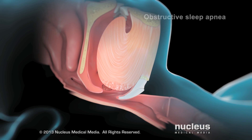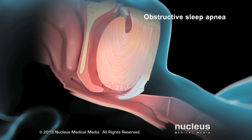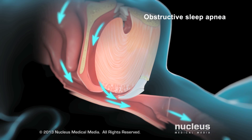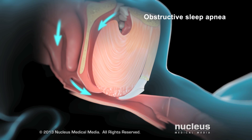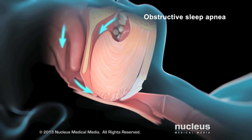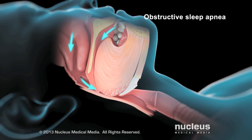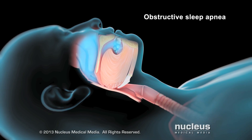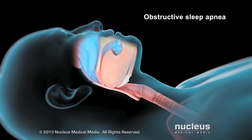If you have obstructive sleep apnea, the muscles of your mouth and pharynx may relax too much. Your tongue drops onto the soft tissue in the roof of your mouth, pressing it against the back of your throat. This completely blocks the flow of air into your lungs.